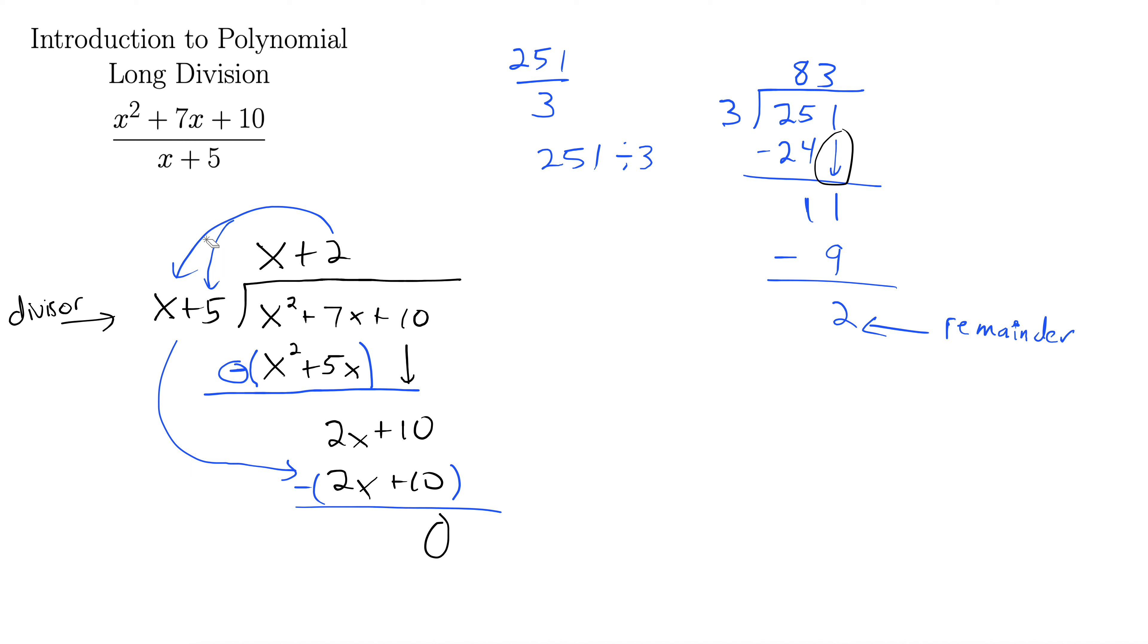And then at the end, what you have left up here on top of the division symbol, this is your answer. x plus 2. Eventually, we will get remainders down here. But when we first start with these, there's no remainder. We don't have to worry about that. And honestly, it's not much worse when there is a remainder.